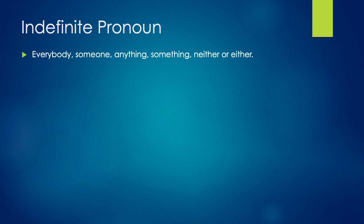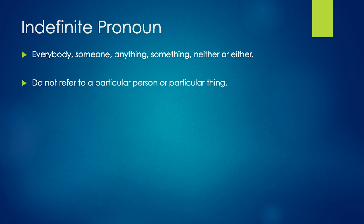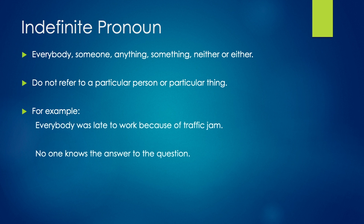Now let's move on to indefinite pronouns. These are words like everybody, someone, anything, something, neither, or either. They do not refer to any particular person or particular thing, so they are called indefinite pronouns. For example, 'Everybody was late to work because of the traffic jam' and 'No one knows the answer to the question.' Here 'everybody' and 'no one' are indefinite pronouns. Indefinite pronouns act as the subject of the sentence and they usually take a singular verb.